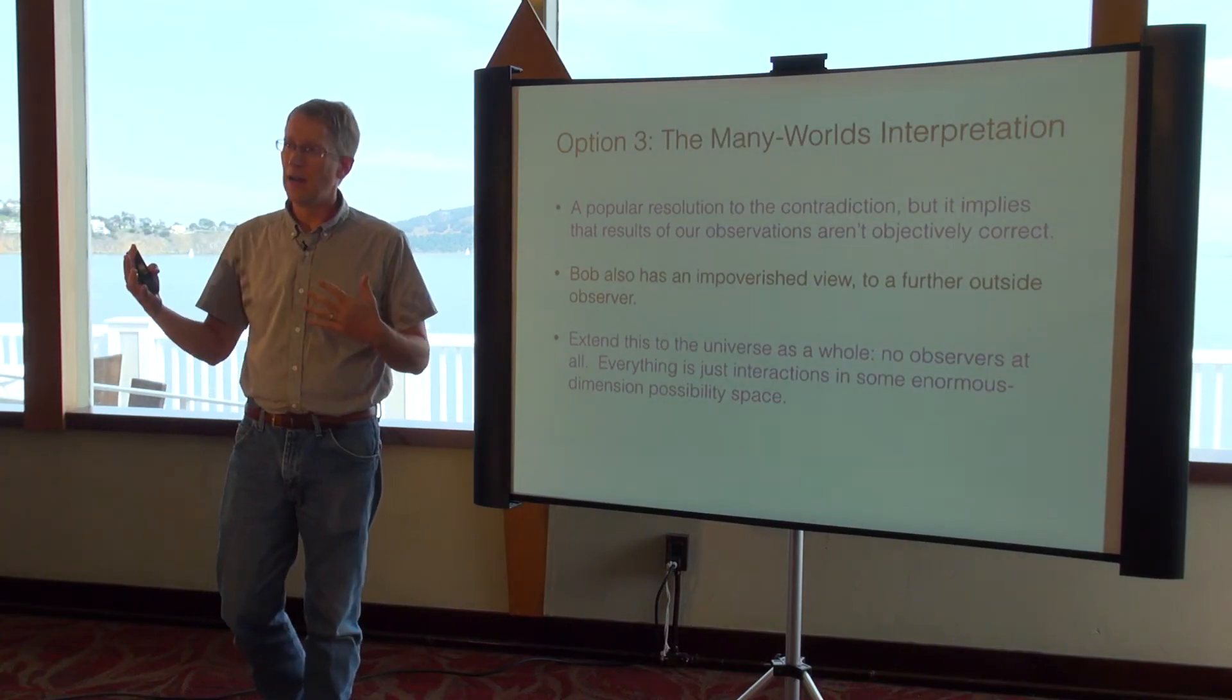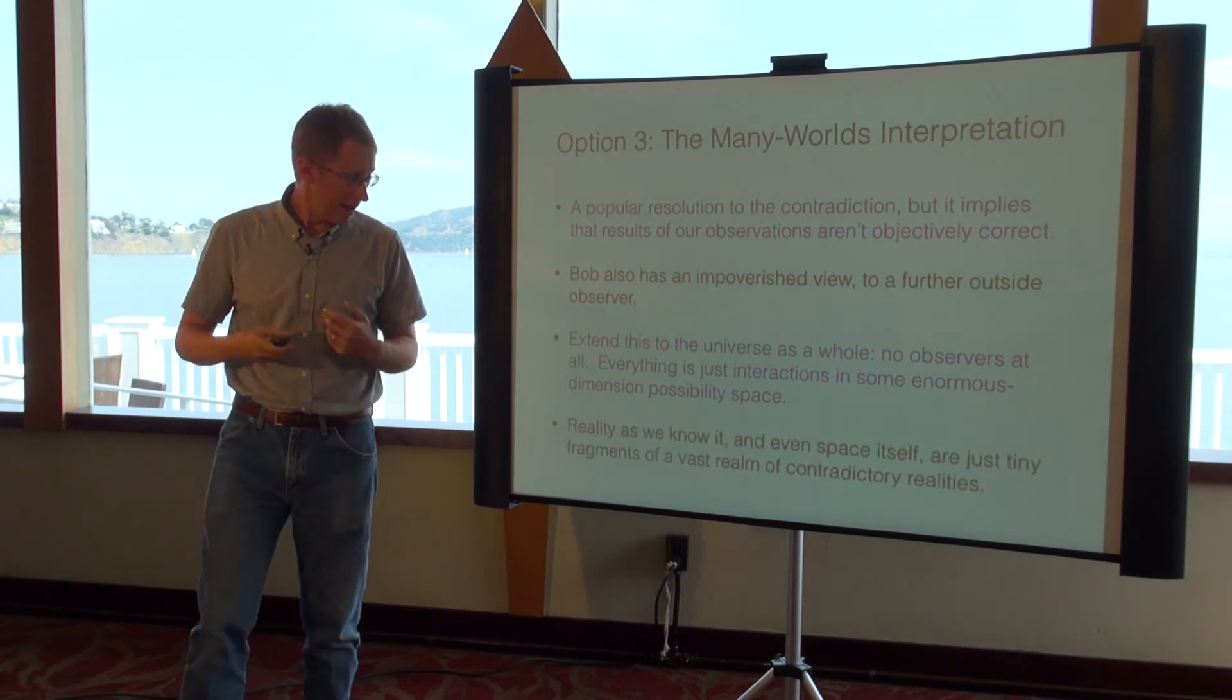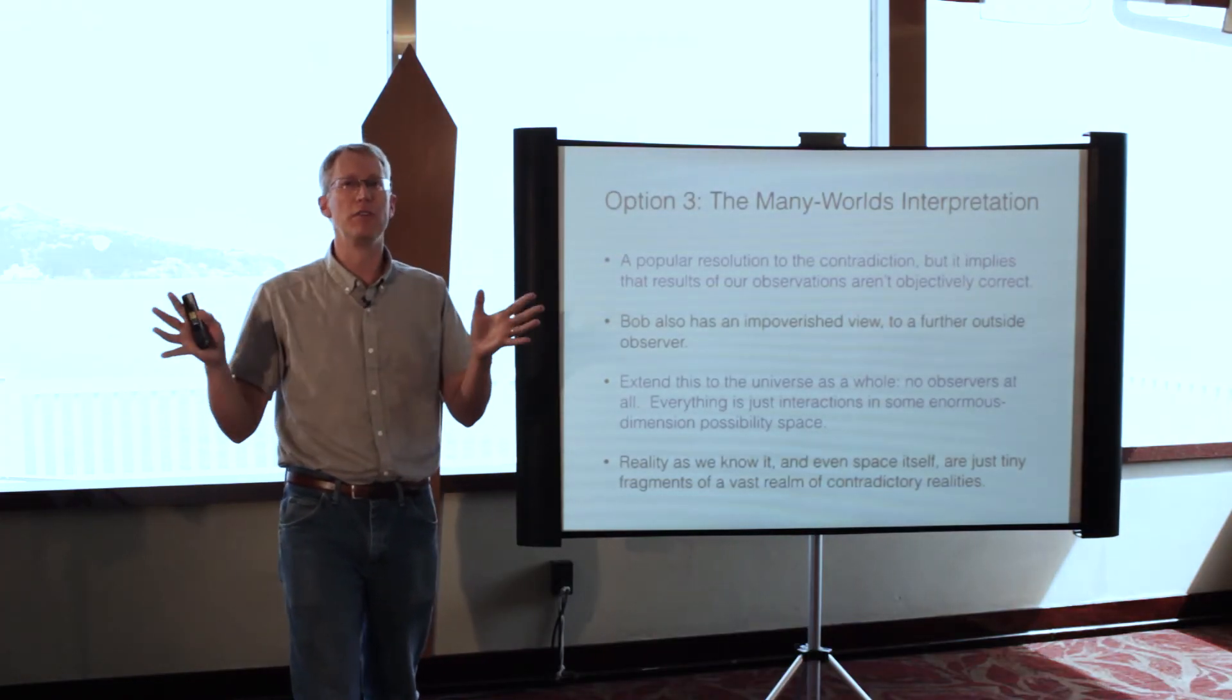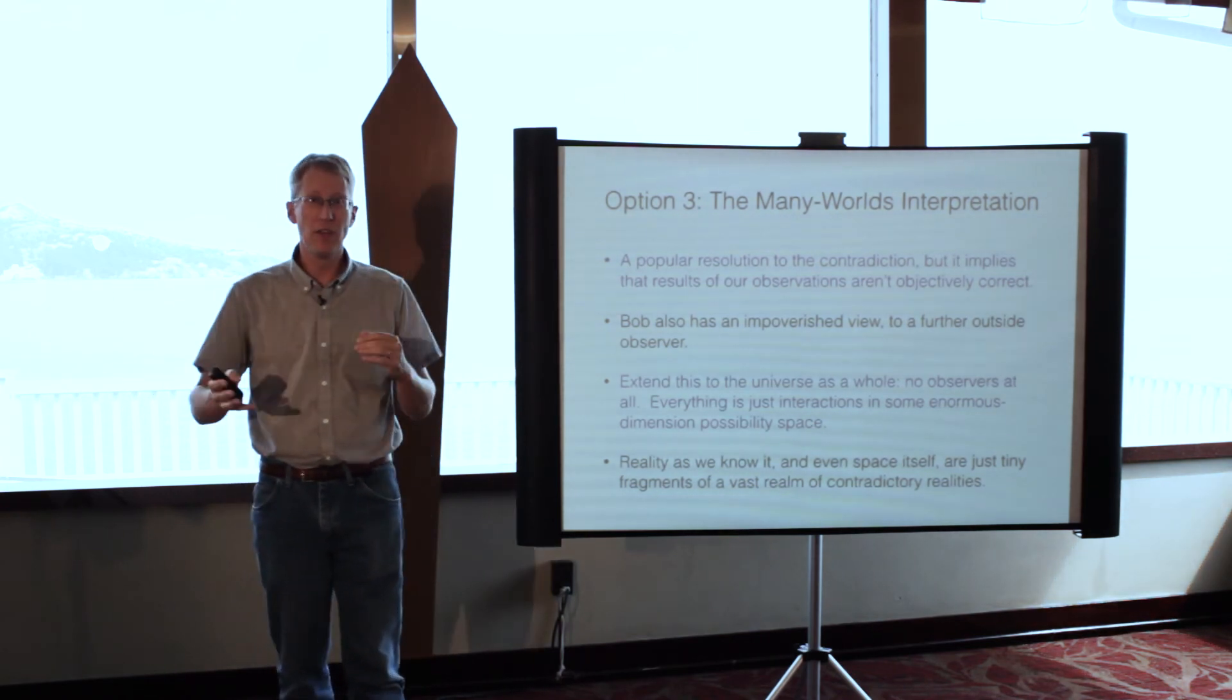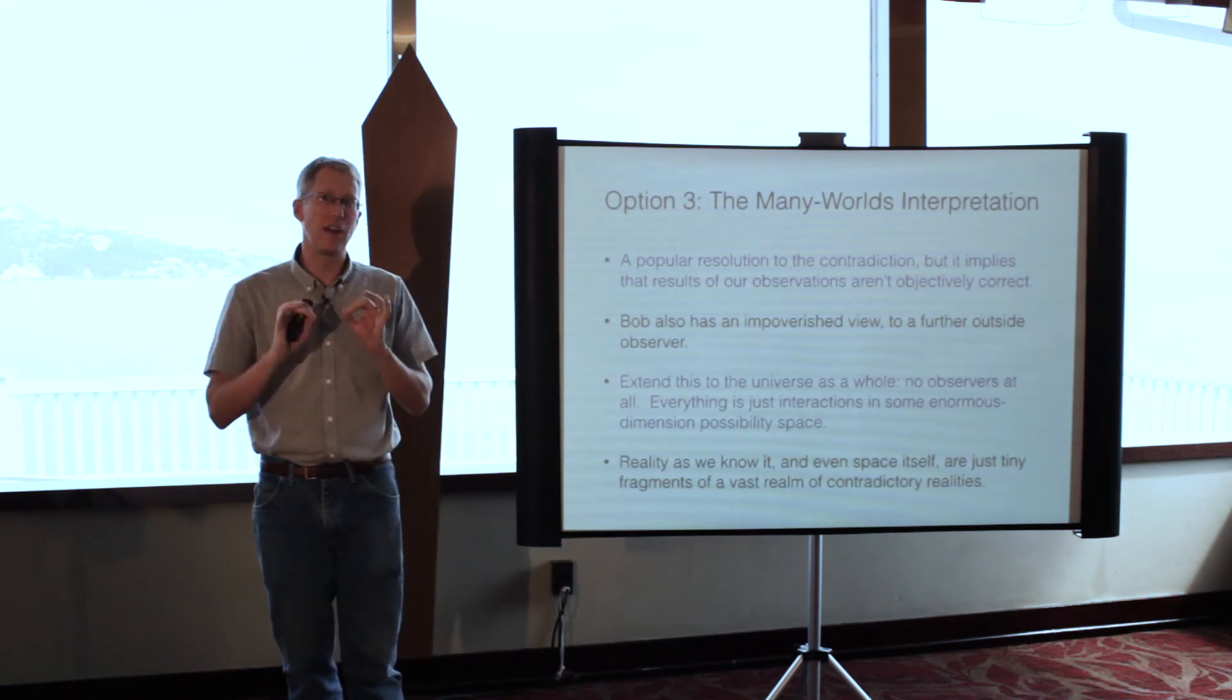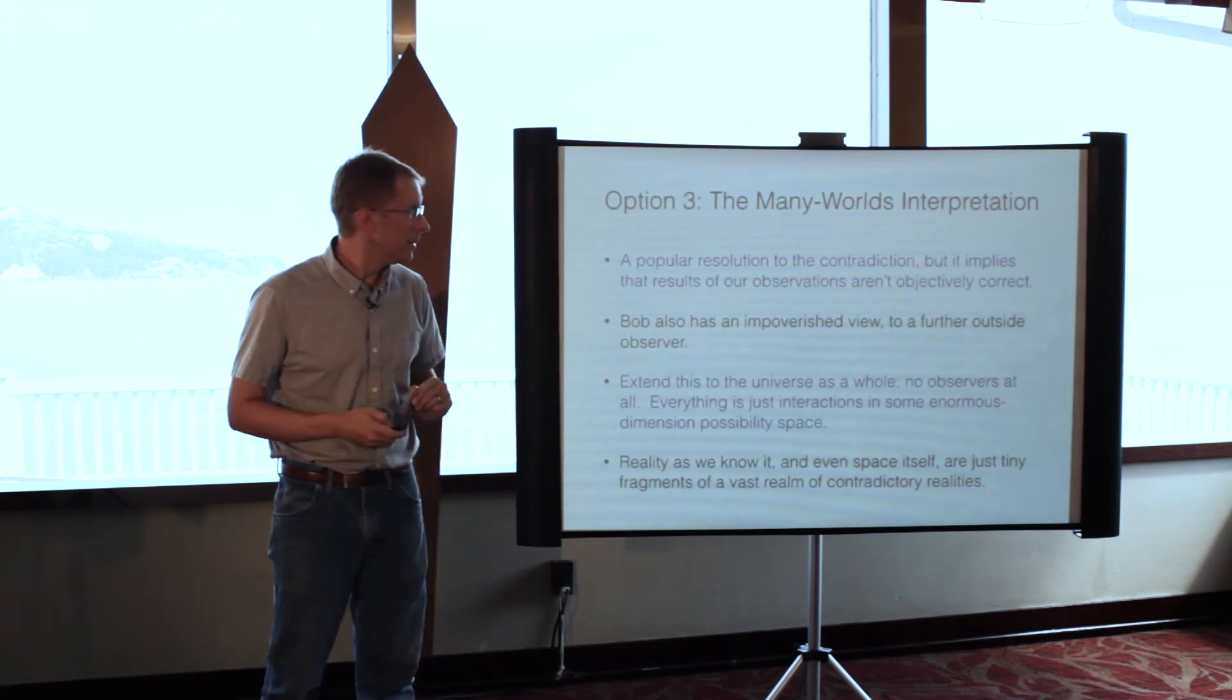Then you say, ah, this whole observer thing was just a red herring. Really there are no observers—it's all interactions in some high massive dimensional configuration space or possibility space. If that's true, then reality as we know it in space and time is wrong. Even space itself—although time strangely survives—but space is wrong. Things don't live in space; they live in this higher dimensional configuration space and that's where reality is happening. We are just seeing this very tiny subset of this deeper reality. That's the many worlds interpretation.